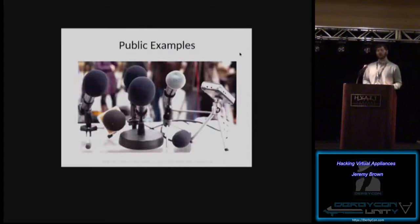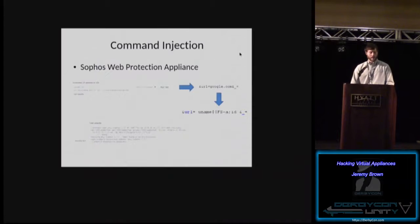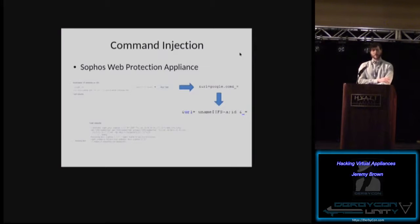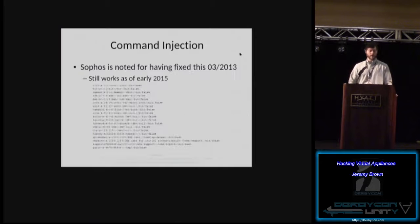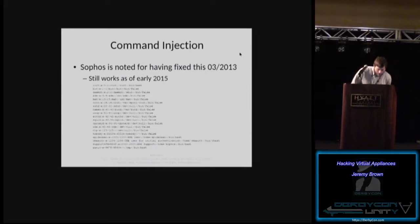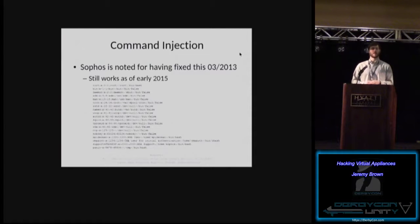Public examples to get you into the mode of these bugs: In the Sophos Web Protection Appliance, there was a command injection vulnerability found a couple years ago where you can insert commands in the URL parameter. This was supposedly fixed in 2013, but I tested it earlier this year and it actually still works. There's an advisory by SEC Consult Group showing a detailed timeline where Sophos said it was fixed — but I tested it and the command injection in the Sophos web appliance is still unpatched.